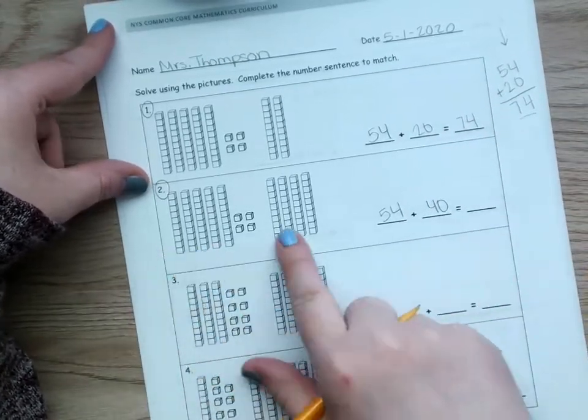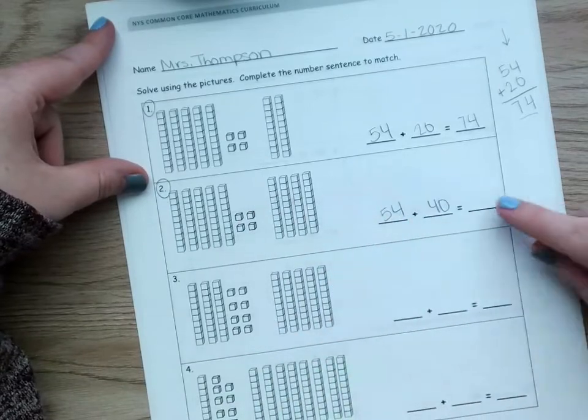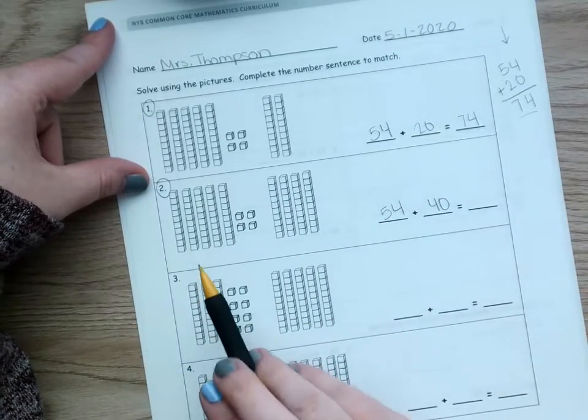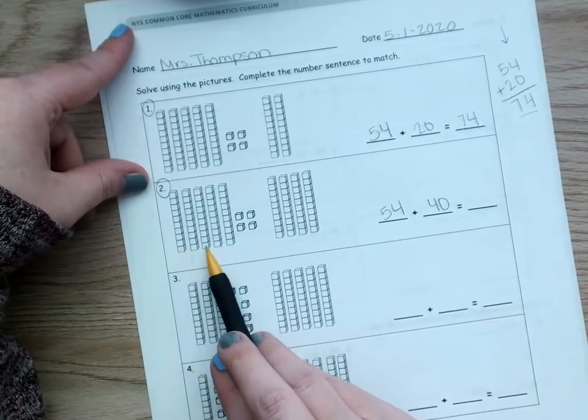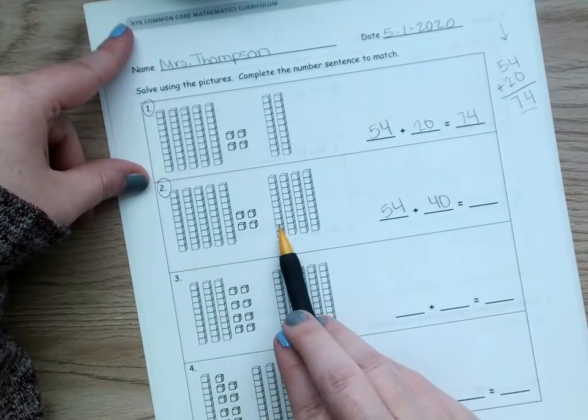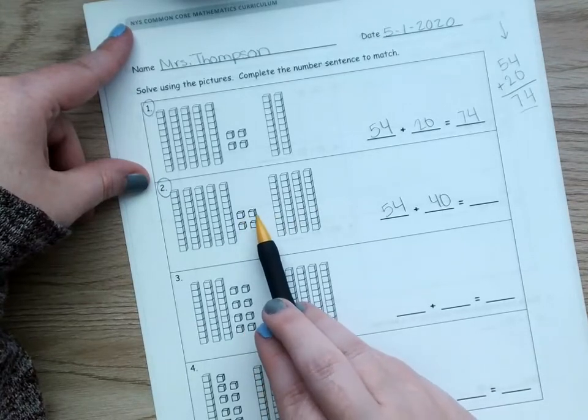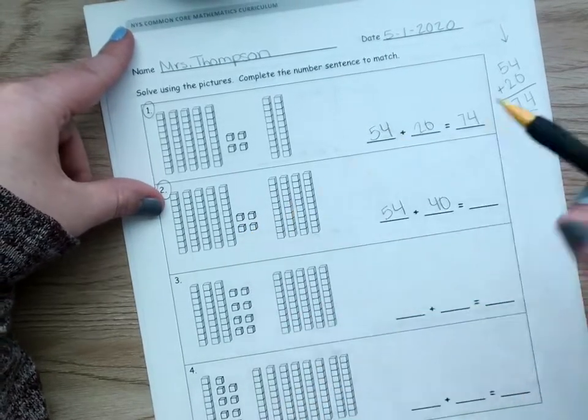And again, I could count them up from the picture or I could line them up to add over here. I'm going to do both for you. So, we've got 10, 20, 30, 40, 50, 60, 70, 80, 90. Go back and count the ones. 91, 92, 93, 94.